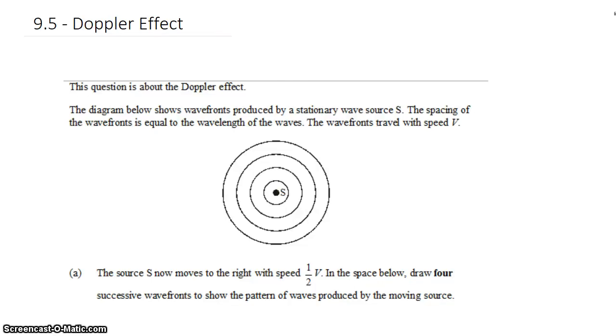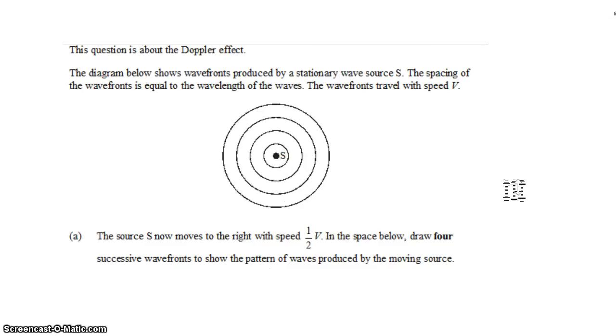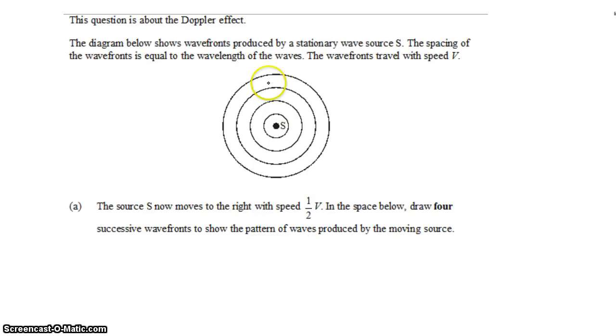Hi, David Ken here with another question bank question in topic 9.5. We're looking at the Doppler effect. We have a diagram that shows the wavefronts produced by a stationary wave source S. The spacing of the wavefronts is equal to the wavelength of the waves, and the wavefronts travel with speed V, so they're spreading out. You can imagine dropping a pebble in a pond, that's what this diagram is.